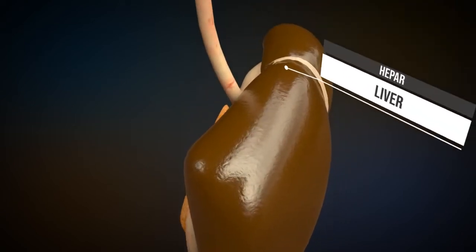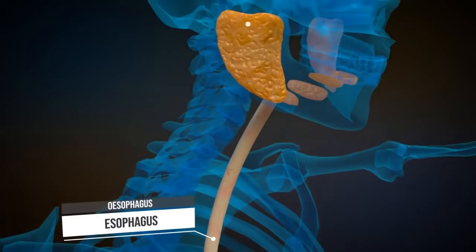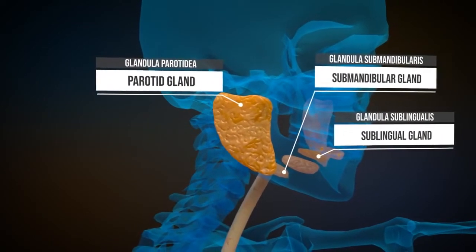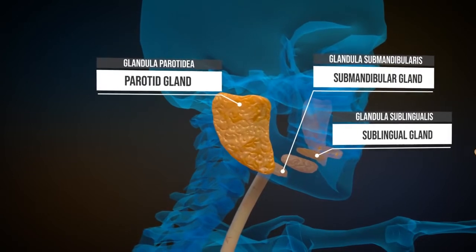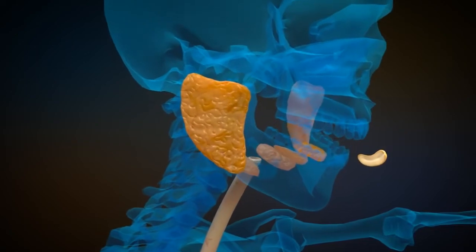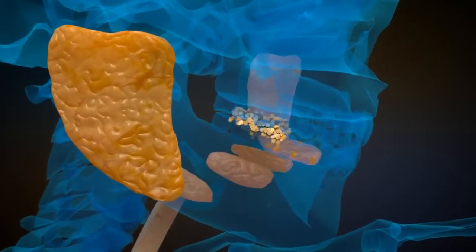The esophagus is also part of this system, as well as various salivary glands near the mouth. First, the food is broken up in the mouth by the teeth and then mixed with saliva with the help of the salivary glands.